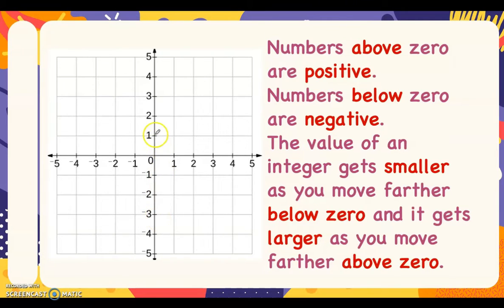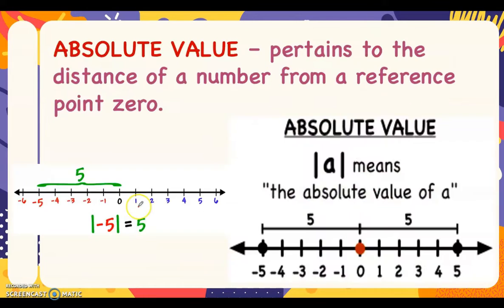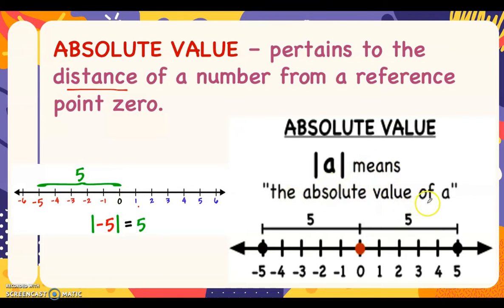Let's talk about absolute value. Absolute value pertains to the distance of a number from a reference point, zero. We use two vertical lines as the symbol for absolute value. For example, |a| means the absolute value of a.